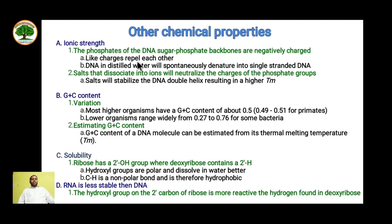Let's see other chemical properties. First, ionic property: the phosphates of DNA's sugar-phosphate backbone are negatively charged, so like charges repel each other. DNA in distilled water will spontaneously denature into single-stranded DNA over time. Salts that dissociate into ions will neutralize the charge on the phosphate groups, stabilizing the DNA double helix and resulting in a higher melting temperature (Tm). Regarding GC content, most higher organisms have a GC content of about 0.5, while lower organisms range from 0.27 to 0.76. Higher GC content increases the melting temperature of DNA.